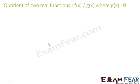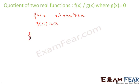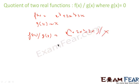Similarly, you can divide two functions. For example, f(x) = x³ + 2x² + 3x and g(x) = x, then f(x)/g(x) = (x³ + 2x² + 3x)/x = x² + 2x + 3. Thus we have seen that we can add, subtract, multiply, divide two functions, or multiply a scalar by a function.